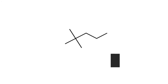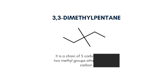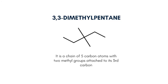The fifth one is 3,3-dimethylpentane, which is a chain of 5 carbon atoms with 2 methyl groups attached to its third carbon. This one is quite similar to the previous isomer, but here we attach the 2 methyl groups to the third carbon.